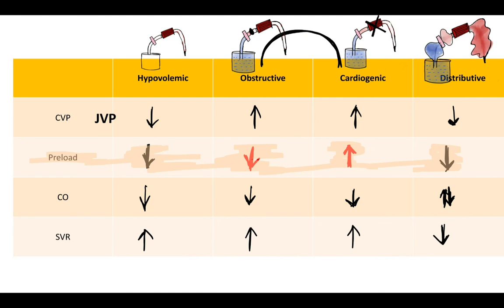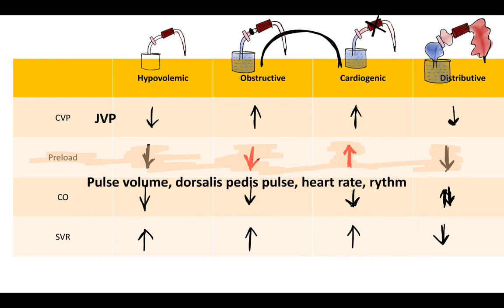If echocardiogram is unavailable to measure stroke volume and cardiac output, assess the peripheral pulse — for example, the dorsalis pedis. Evaluate the heart rate and rhythm, and the pulse volume, to get an indication of whether cardiac output is low or high.